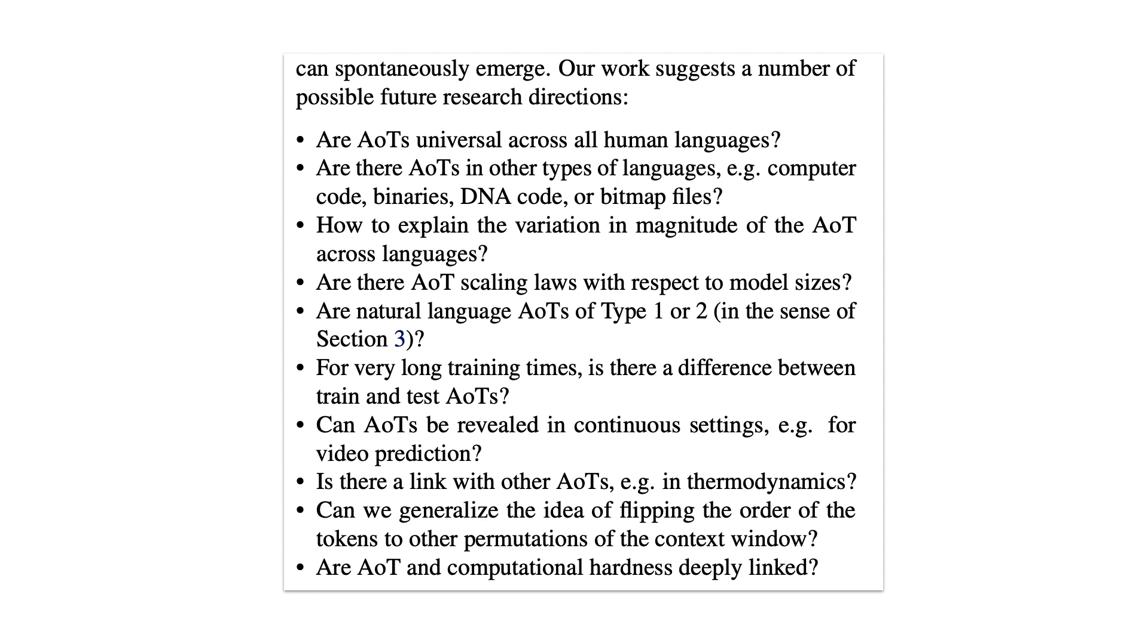The paper concludes with a nice list of other open questions raised by these findings. Why does the strength of the arrow of time vary by language? Are there similar arrows of time in DNA sequences? What about video frame prediction? Is it strictly easier to predict frames going forward in time rather than backward? It's also interesting to wonder if the arrow of time seen here has any connection with the existing concept of the arrow of time from physics and thermodynamics. In this paper, they give mostly a computational complexity explanation, but maybe there are other factors playing a role.